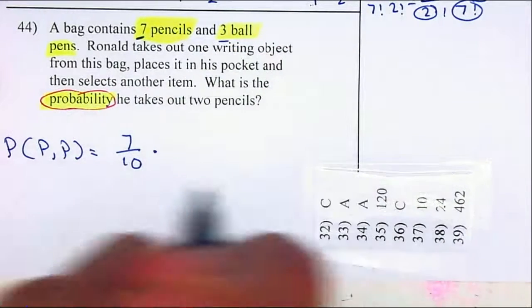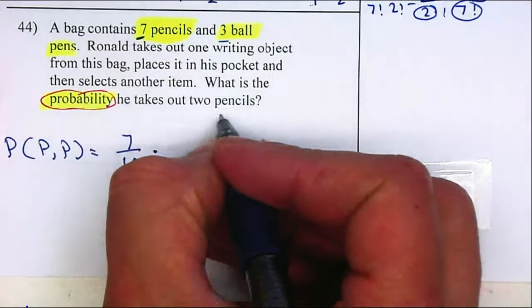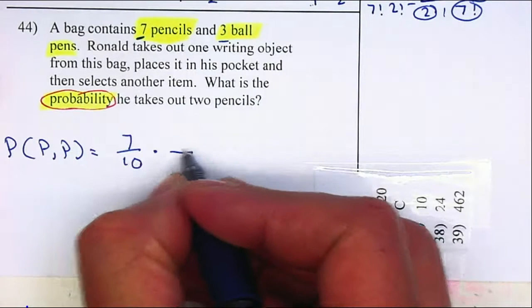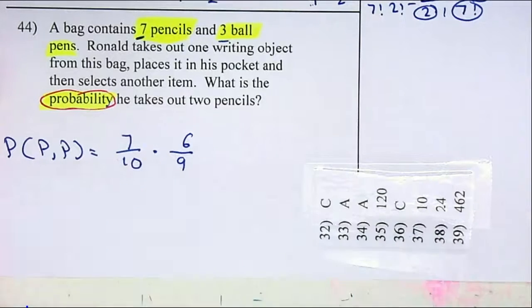So you take the pencil and place it in your pocket. What's the probability that the next one is going to be another pencil? How many pencils are left in there? Six. And how many writing objects? Nine, because you have one in your pocket.